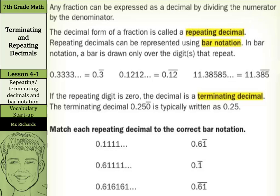The decimal form of a fraction is called a repeating decimal. Repeating decimals can be represented using bar notation. In bar notation, a bar is drawn only over the digits that repeat. For example, in 0.33333 forever, we draw the bar just over one of the 3s, representing that 3 repeating forever. With 0.1212, we only draw it over the 1, 2. And in the case of 11.38585, what is repeating here? It's 8, 5. So we write 11.3 and then the 8, 5 with the bar over just the 8, 5.